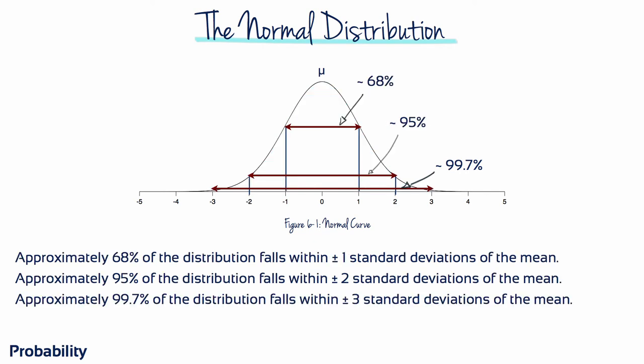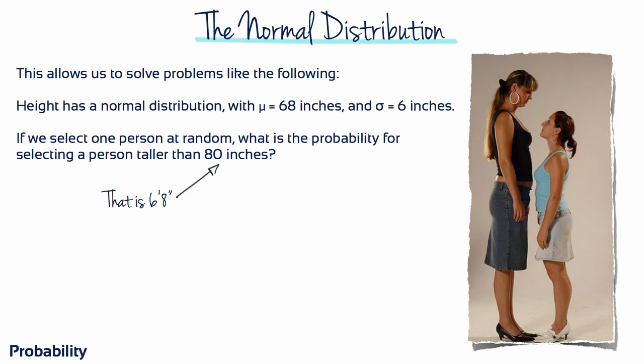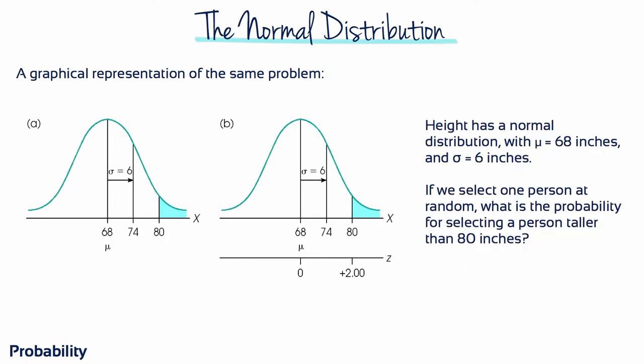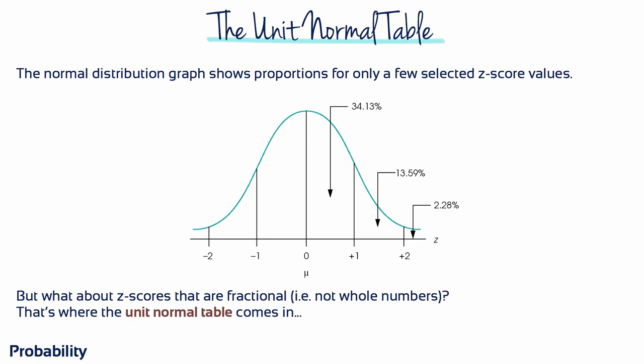This figure sums up these three important proportions and their relationship to standard deviations of the mean. For example, height has a normal distribution with a mean of 68 inches and a standard deviation of 6. If we select one person at random, what's the probability of selecting a person taller than 80 inches? Converting x equals 80 into a z-score, we get a value of plus 2. The proportion of scores in the tail beyond z equals 2 is roughly 2.28% — this is the percentage of the human population who are taller than 6 foot 8. This graph shows proportions for only a few selected z-scores. A more complete listing is provided in the unit normal table.